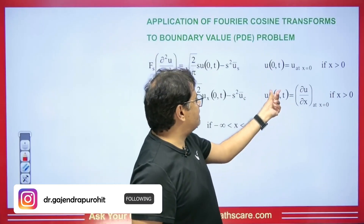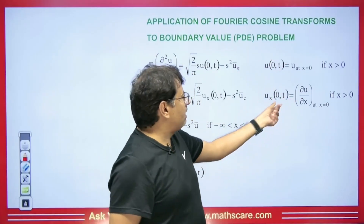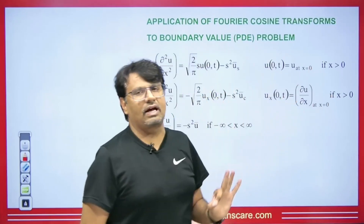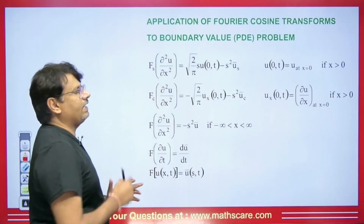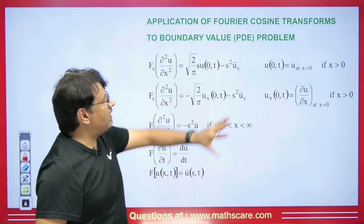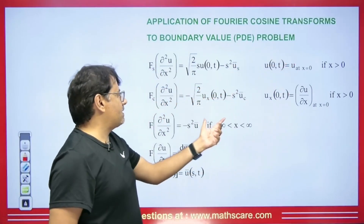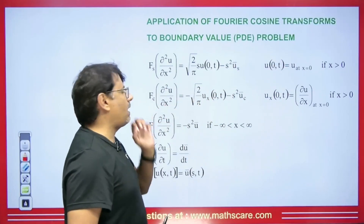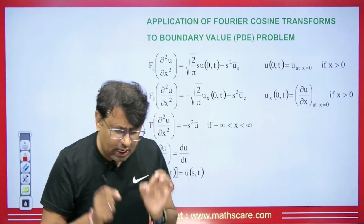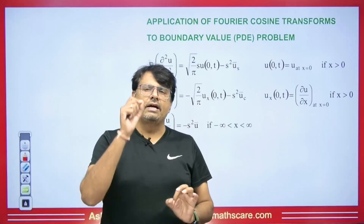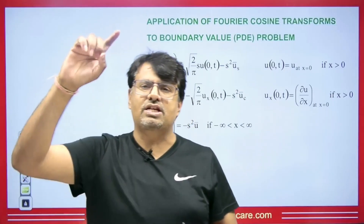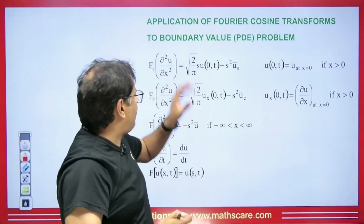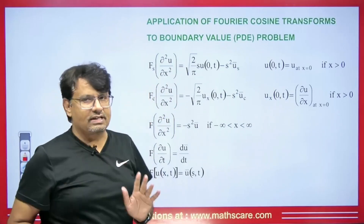If u_x(0,t) is given — meaning del u by del x at x equals 0, with x greater than 0 — then we use the Fourier cosine transform. If neither condition is given and x ranges from minus infinity to plus infinity, we apply only the Fourier transform. Note that unlike the Laplace transform which is always taken with respect to t, the Fourier transform here is applied with respect to x, and t is treated as is.